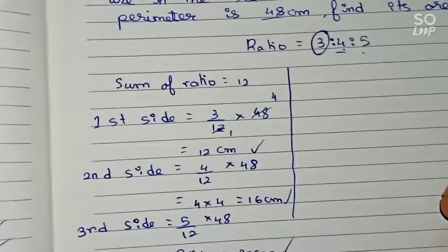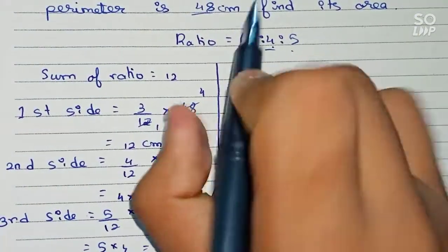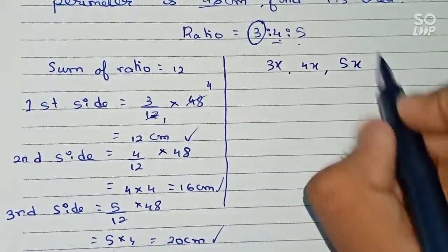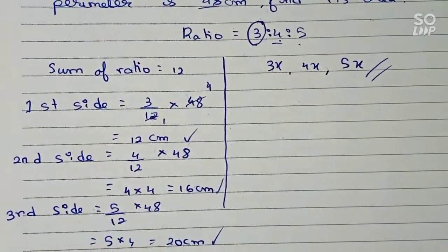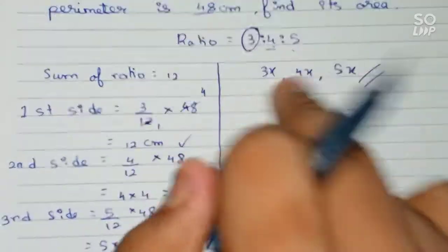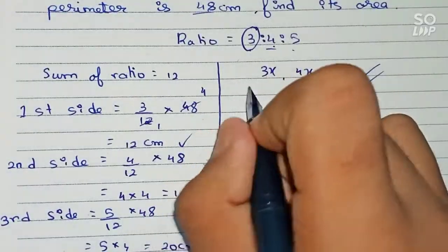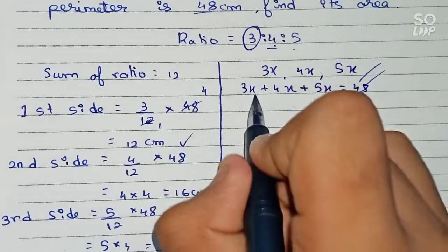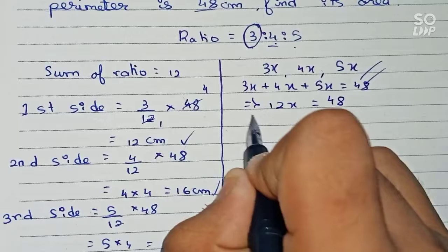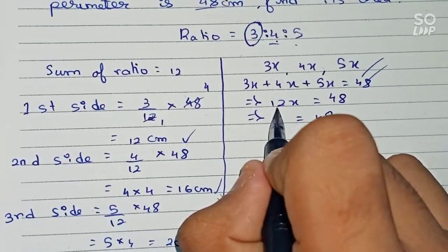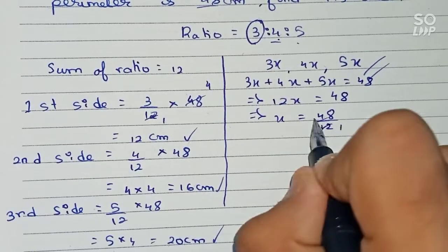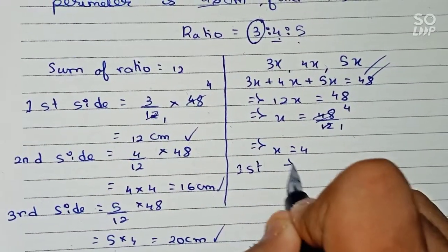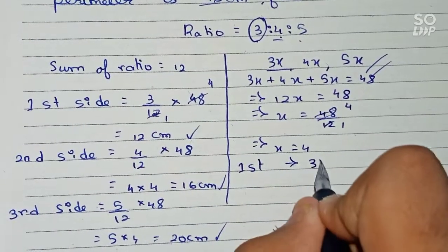In the second process, let the three sides be 3x, 4x, and 5x. We know the perimeter is 48, so 3x + 4x + 5x = 48, which gives 12x = 48. Therefore x = 48 ÷ 12 = 4.